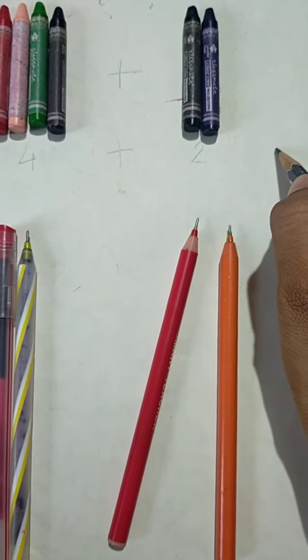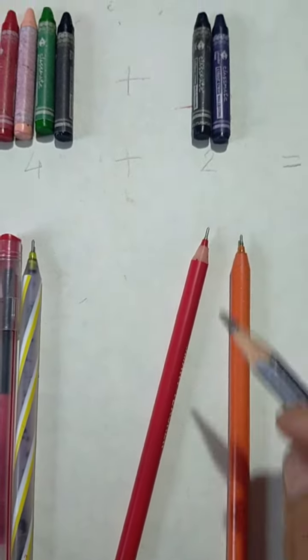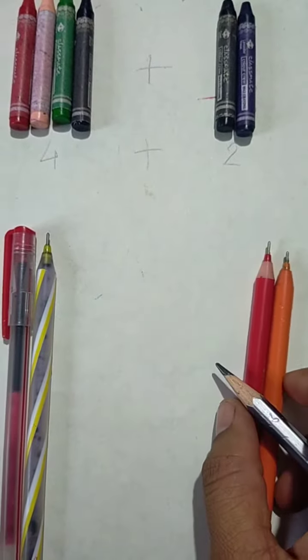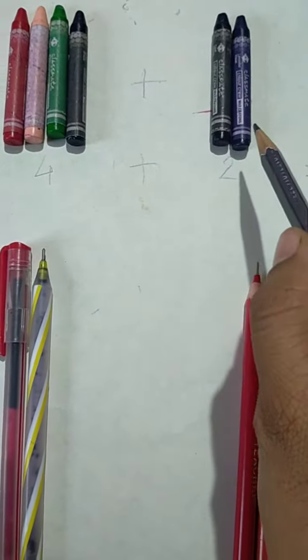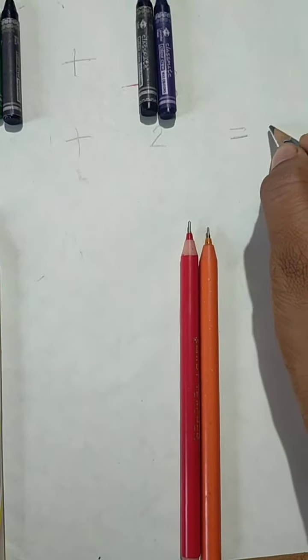Now what we will do? Addition. So, in addition we have to add 2 numbers. Here we have 4. Then after 5 and 6. How many crayons? 6.